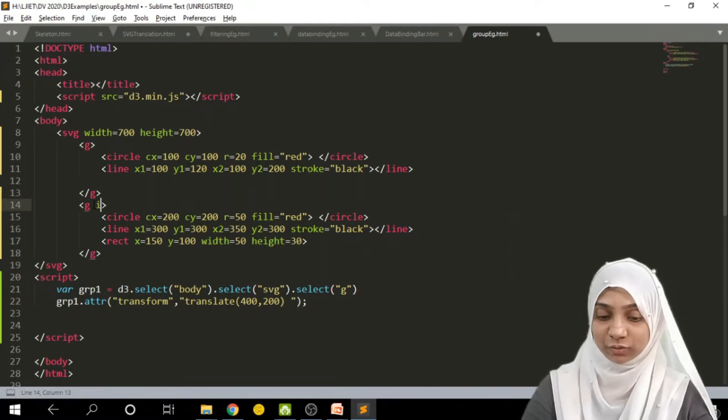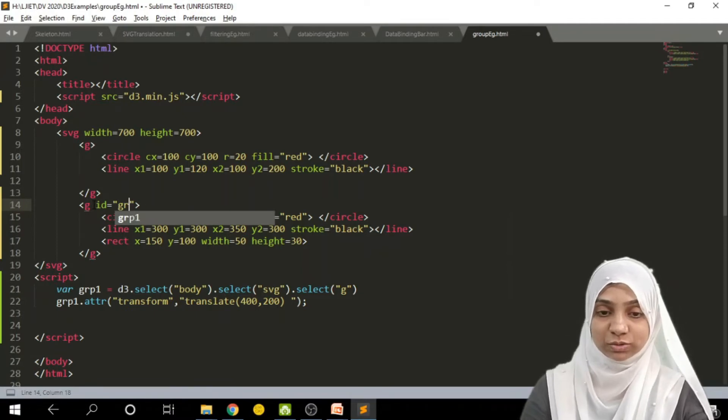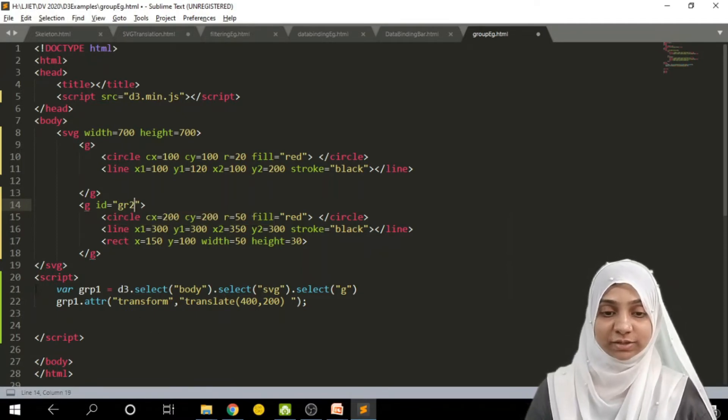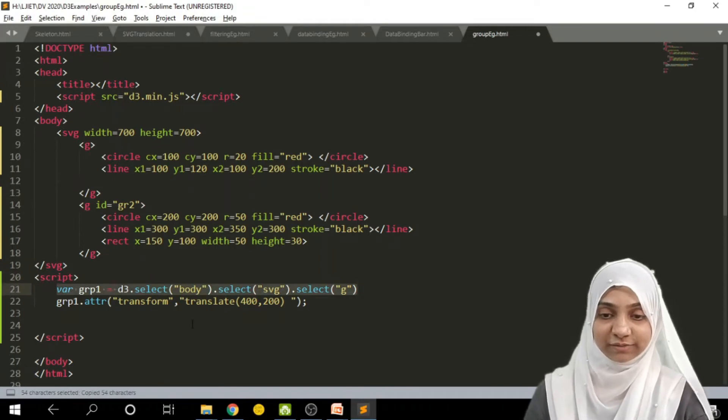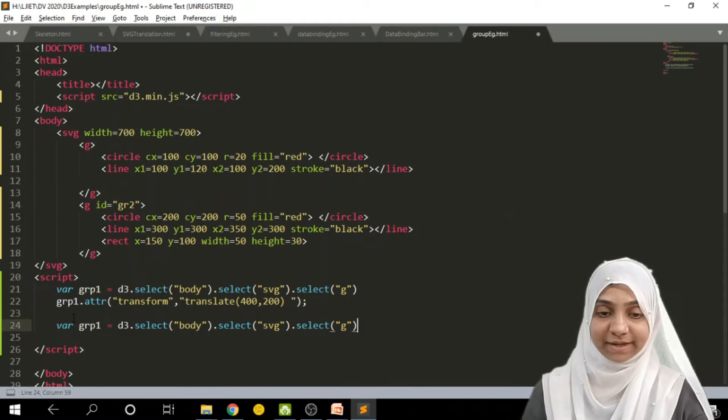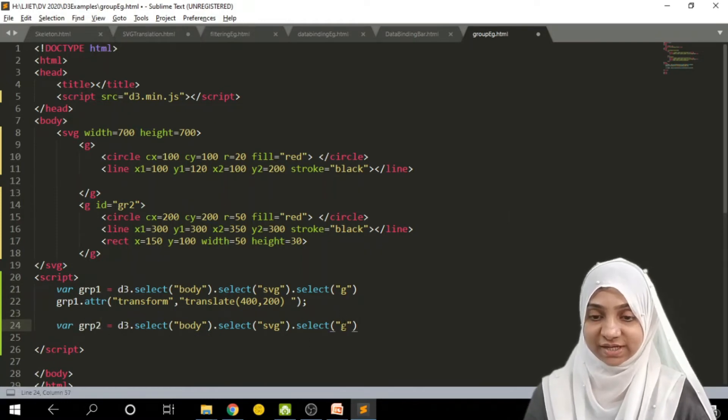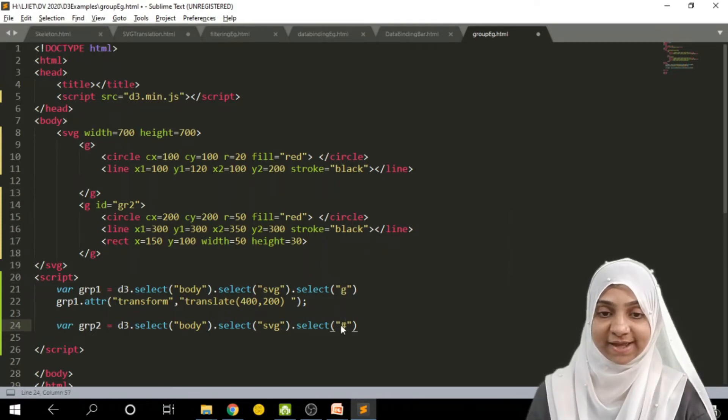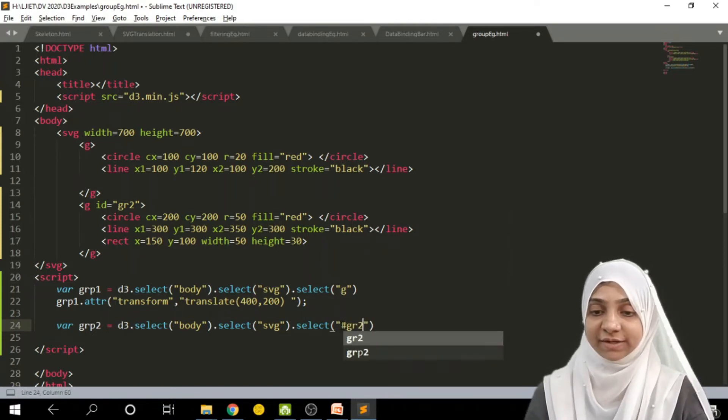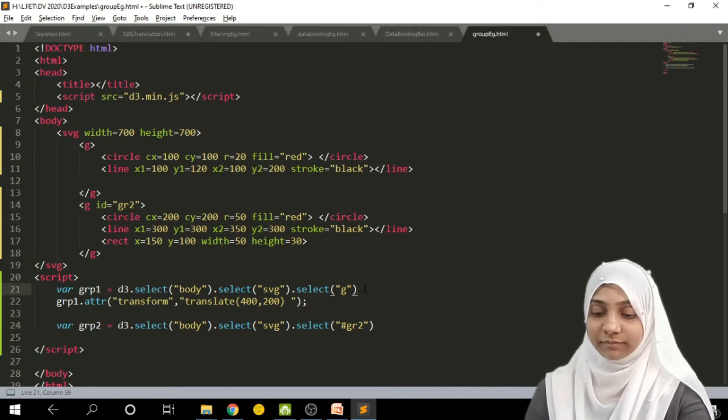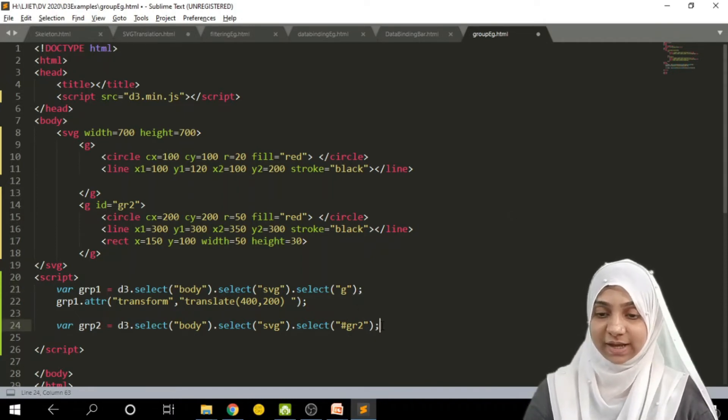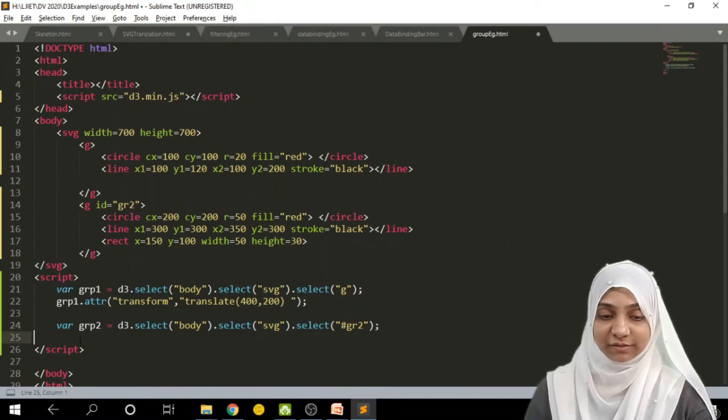First of all, I will give ID to another group. ID is equal to group 2. And I will create its selection, that is, I will simply copy-paste and call it as group 2, select body, SVG. Instead of selecting G tag, I will supply hash and ID of another tag. So here, simply ID of another tag is given.